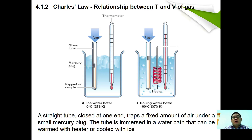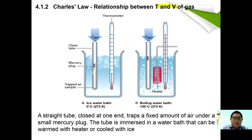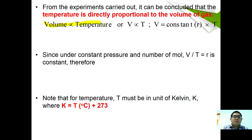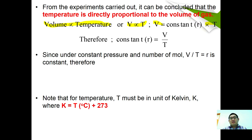Charles' law studies the relationship between temperature and volume of gas. A straight tube closed at one end traps a fixed amount of air under a small mercury plug. When the tube is immersed in a cold water bath, the trapped air volume is small; when immersed in a hot water bath, the volume of gas is greater. Based on this experiment, volume is directly proportional to temperature: V = R × T, so at constant pressure and number of moles, V₁/T₁ = V₂/T₂.